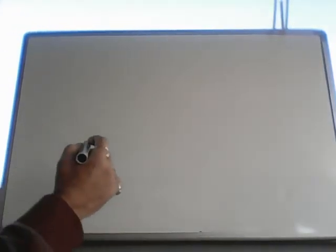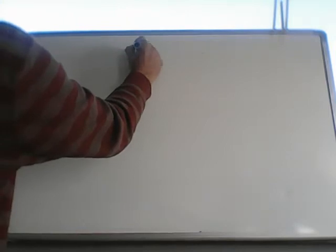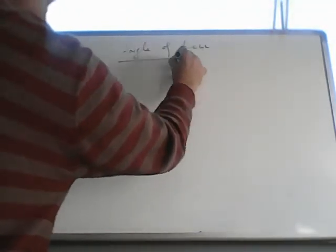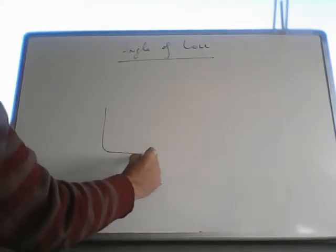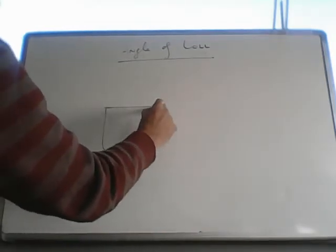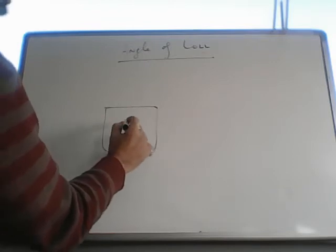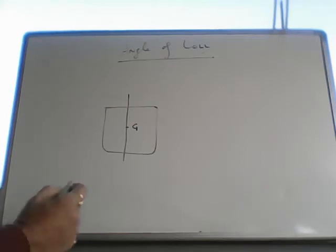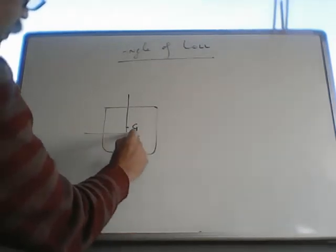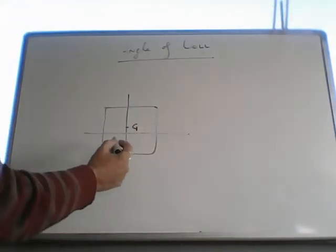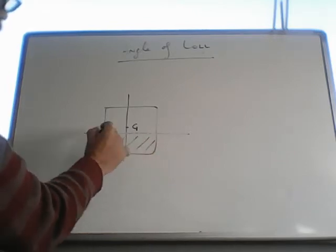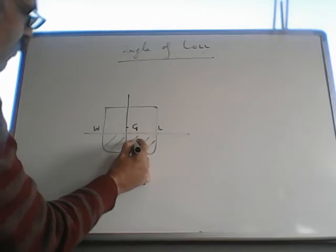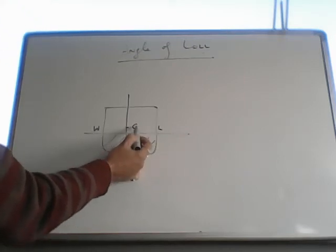Today we will do angle of loll. Now if this is your ship which has a center of gravity here, and the center of gravity of the underwater volume - this is the water line - will be somewhere here, that is called B. The center of gravity of the ship is G.